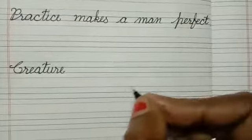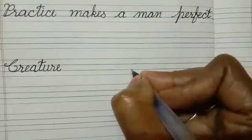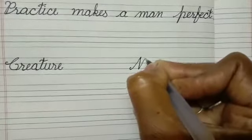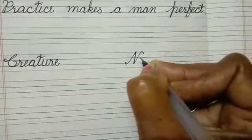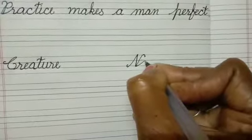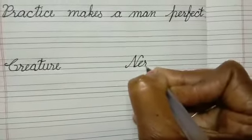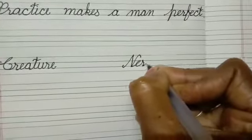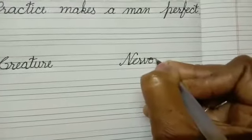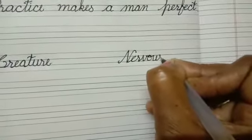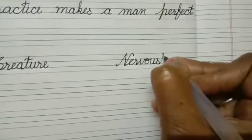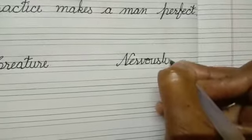Nervously. N — make a slot line, touch the back line, go up. Firstly we are writing nervous: N, E, R, V, O, U, S — nervous. Nervously: N, E, R, V, O, U, S, L, Y — nervously. Say and write. Write in a proper way, neat and clean.